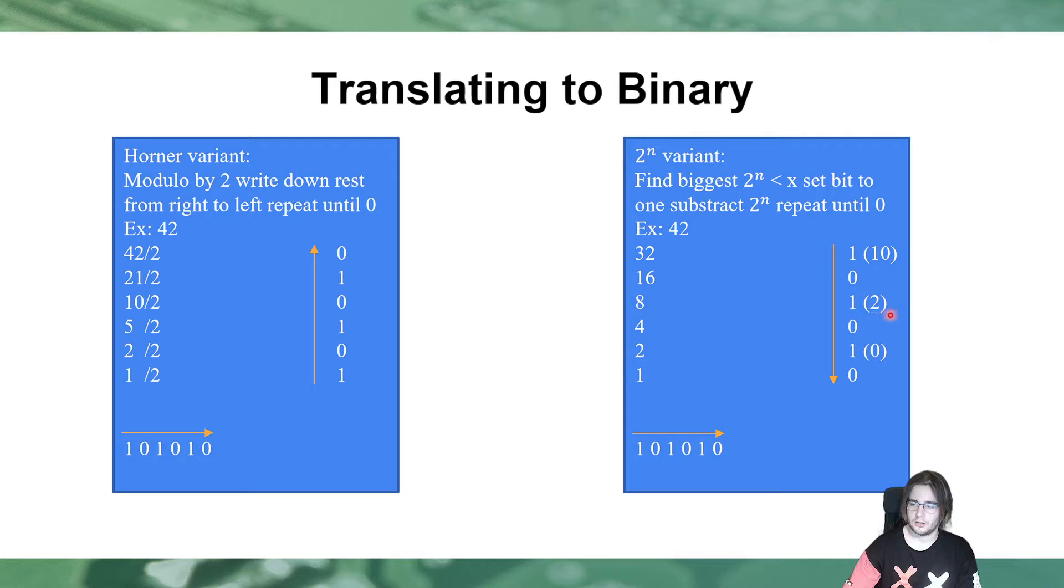Then, we continue the whole thing. The 4 doesn't fit into 2, so we set it to 0, 2 perfectly fits into 2. Very nice. So, we'd set the 2 bit to 1, 2 minus 2 is 0, and then the bits afterwards still have to be set to 0. So, 1 doesn't fit into 0, so we set the bit to 0, and that we just write from biggest bit to lowest bit down, and we get the same solution. So, we must have done everything right.